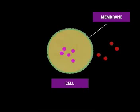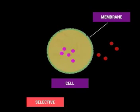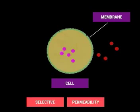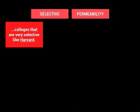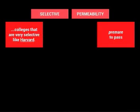When the cell does this, it is known as selective permeability. The word selective means not everyone gets in, just like some colleges like Harvard are very hard to get into. The word permeability comes from the word primere, which means to pass.